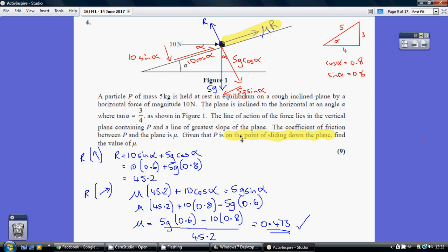Now because the question says that P is on the point of sliding down the plane, the friction is going up the plane. Of course, friction equals mu times R, where R is the normal reaction.